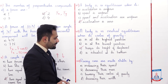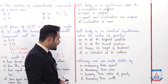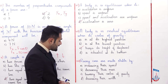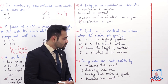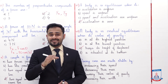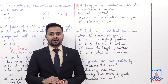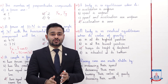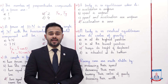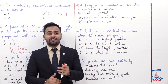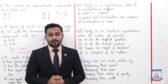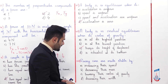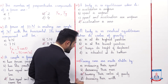MCQ number eight: Racing cars are made stable by — A: increasing their speed, B: decreasing their mass, C: lowering their center of gravity, D: decreasing their width. Racing cars are made stable by lowering their center of gravity. The lower the center of gravity, the more stable the object. That is why racing cars are built heavier on the bottom side and with very low height, so the correct option is C: lowering their center of gravity.